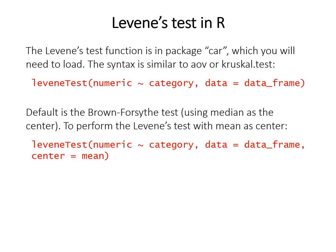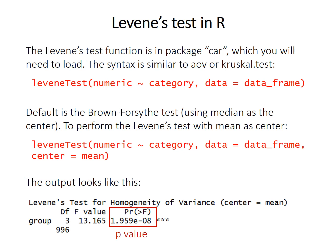The default is the Brown-Forsythe test, using the median as the center. But if you want to perform Levene's test using the mean, you just have to specify center equals mean after giving the data. The output lists the test name, gives the two degrees of freedom, the F statistic, and the p-value.